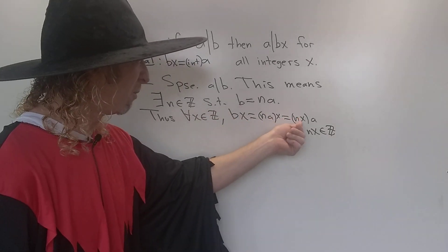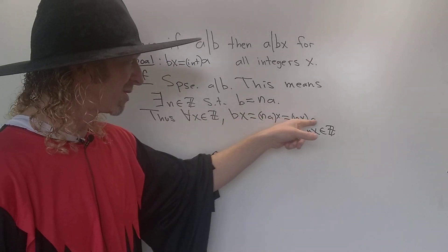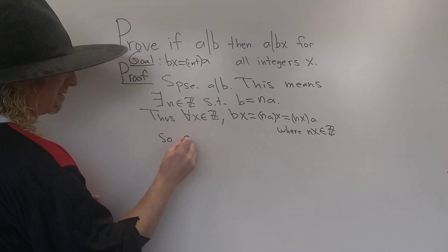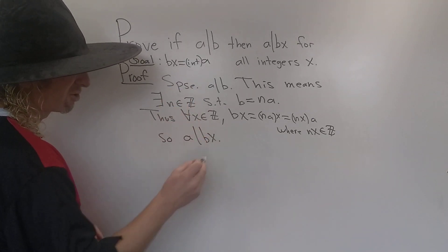So we have that bx is a multiple of a. bx is an integer times a for every x. So this means that a divides bx. And we finished our proof.